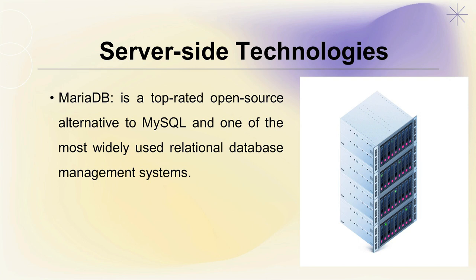Next in storage is PostgreSQL. The idea of creating associations between data is the same for modern relational databases like MySQL, MariaDB, and Apache Hive. However, PostgreSQL offers additional features like table inheritance and function overloading, because it supports the concept of data objects.